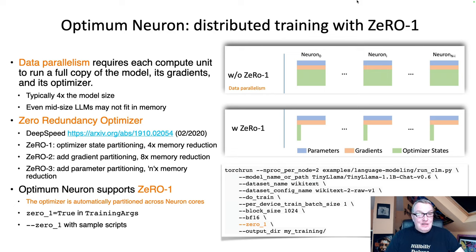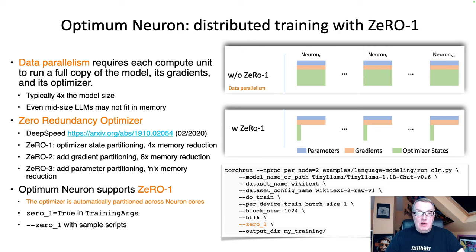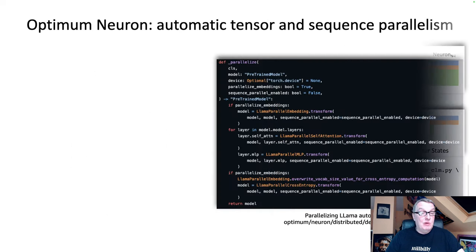We'll run that example in a few minutes. The script we'd run is causal language modeling on TinyLlama with the Wikitext dataset — just add `--zero_1` and you're good to go. Now let's see how to do tensor parallelism and sequence parallelism very easily with Optimum Neuron.